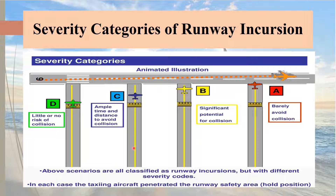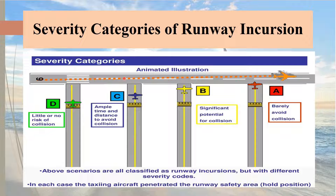In the next case, the aircraft has crossed the runway holding position and moved a little forward toward the active runway, and there is an arriving aircraft. There is ample time and distance to avoid collision between the two aircraft. This situation qualifies for category C severity of runway incursion.